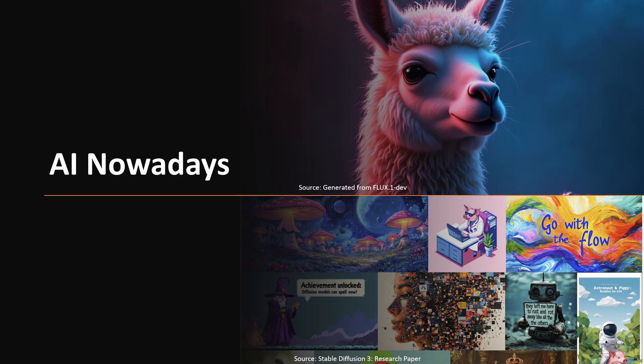Nowadays, deep learning models, especially generative AI, have demonstrated great success across various domains, including images, audio, and text. We have large language models such as GPT and LAMA, as well as image generative AI such as mid-journey and stable diffusion. For example, we can generate the LAMA image at the top by AI.